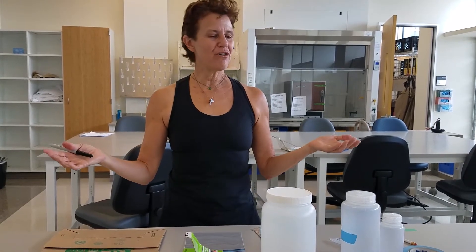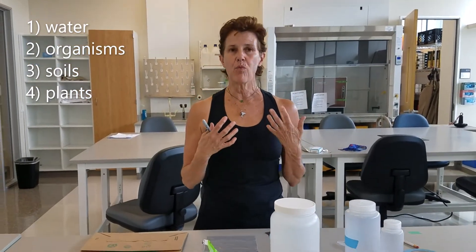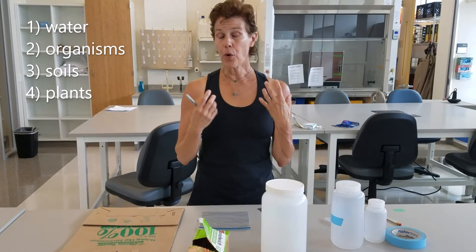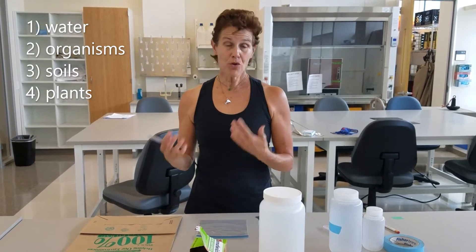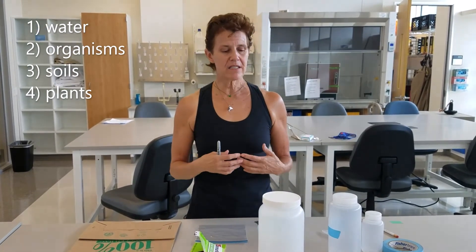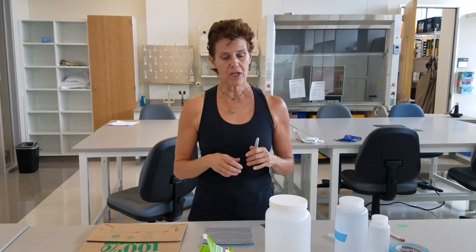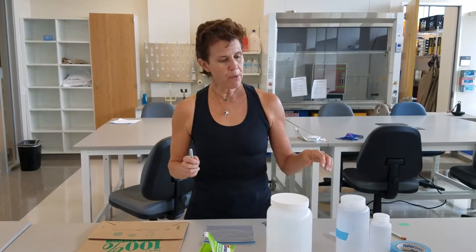The first thing I want to show you is how to label collection bottles. In this class we're going to be collecting water, organisms, soil, and plants, so we need to have a way of going into the field and collecting samples of those types of data and bringing them back to the lab for processing, or recording things on data sheets which we do take to the field. I'm going to show you a couple of bottles here.